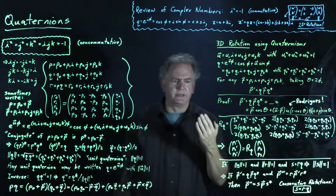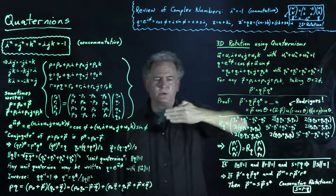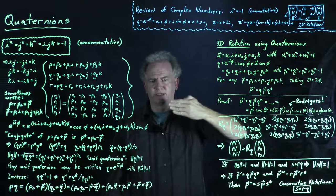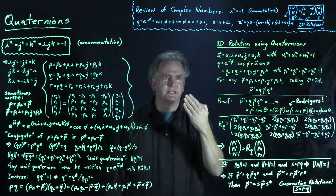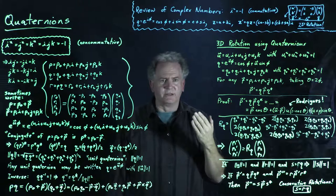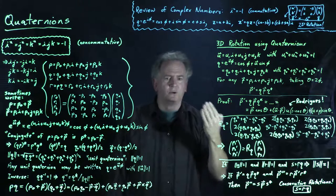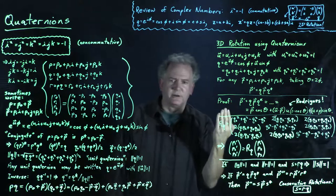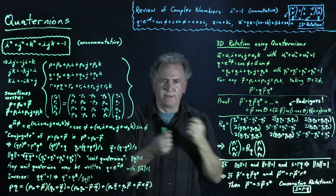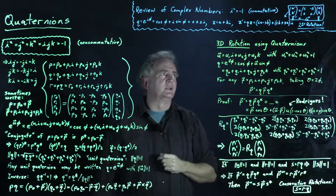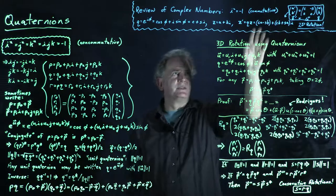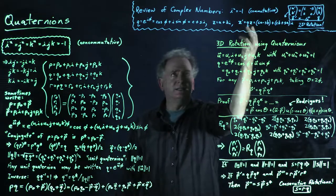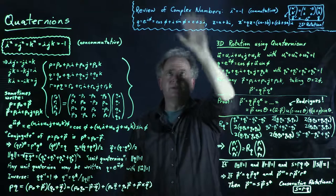2D rotations are naturally commutative operations. If we rotate some object by angle α and then by angle β, that's equivalent to rotating by β first and then by α — order doesn't matter. That's why qz = zq when q and z are complex numbers.